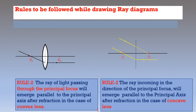Rule 2 is about incoming rays which are passing through the focus. In the case of a convex lens, if the incoming rays are falling on the lens after passing through the focus, they will emerge parallel to the principal axis after refraction.